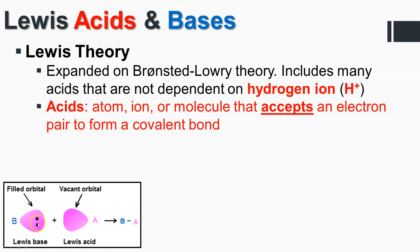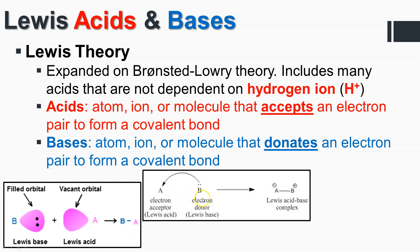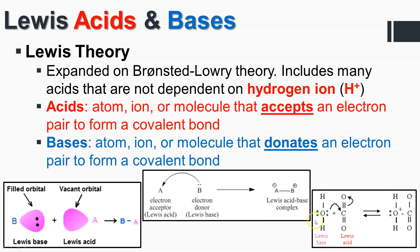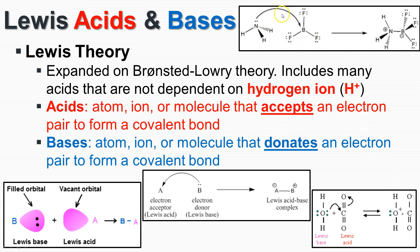A Lewis base has filled orbitals that it donates. The base donates, the acid accepts — Lewis acid is the acceptor, Lewis base is the donor. The base is an atom, ion, or molecule that donates an electron pair to form a covalent bond. This is all about the movement of electrons, not protons. Electrons move from one compound to another — you don't even need to see hydrogen moving from place to place.